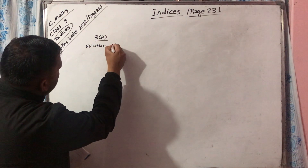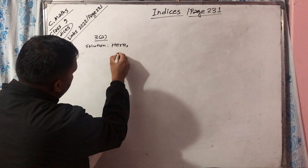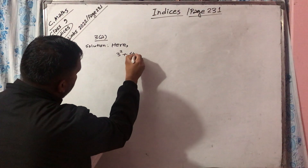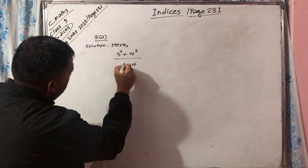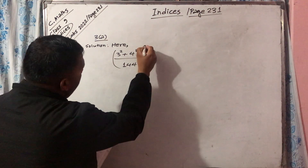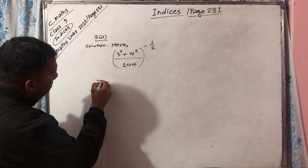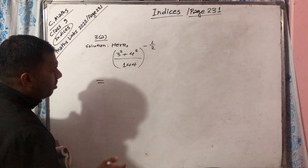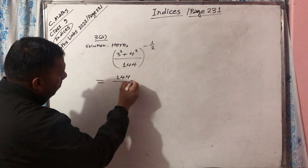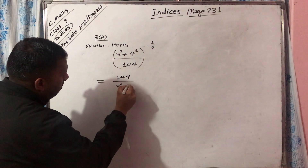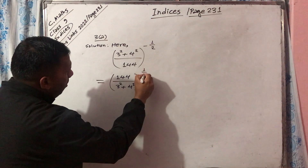Solution here. 3 square plus 4 square, whole upon 144, this whole power is minus 1 by 2. This is equal to — since the power is negative, make it positive by reversing the base fraction.